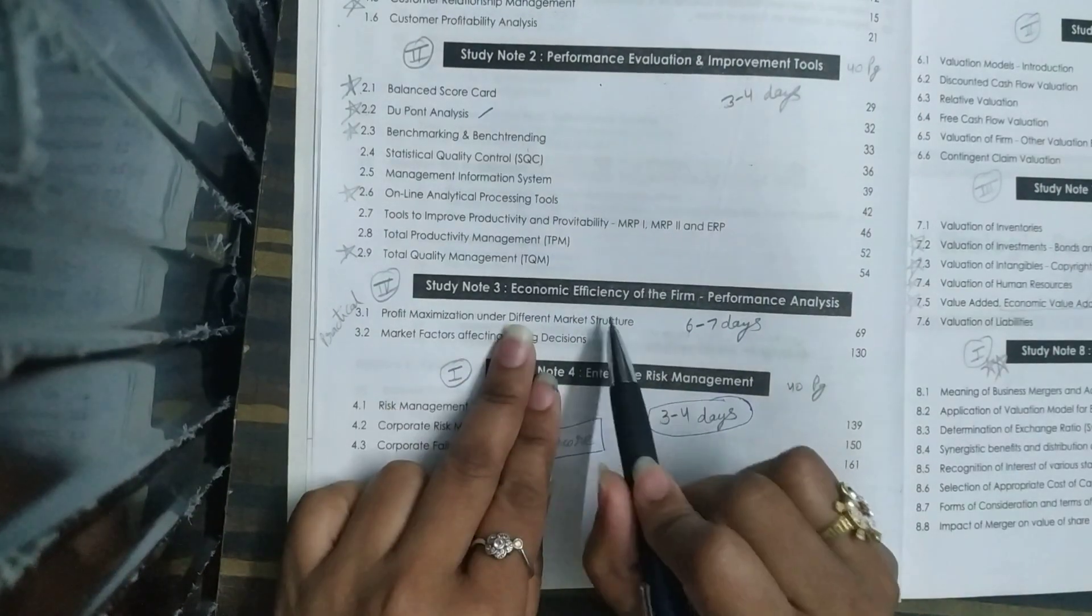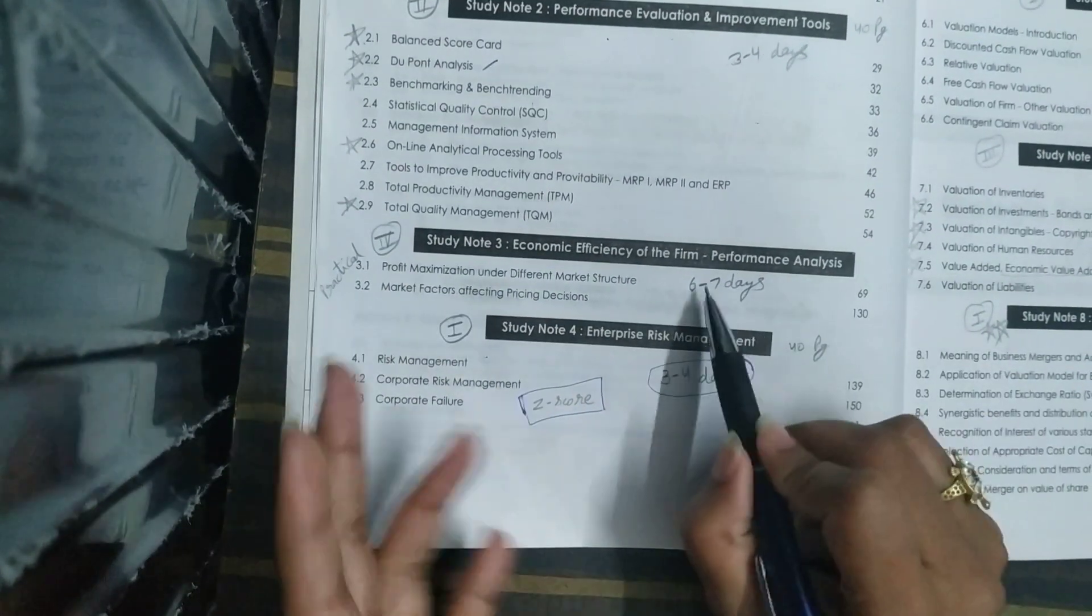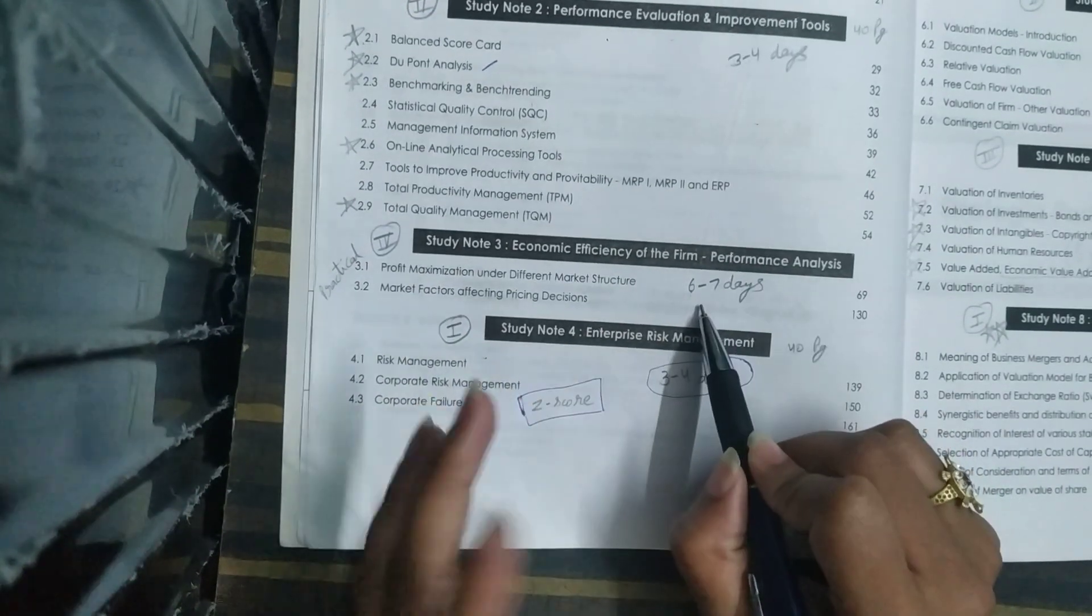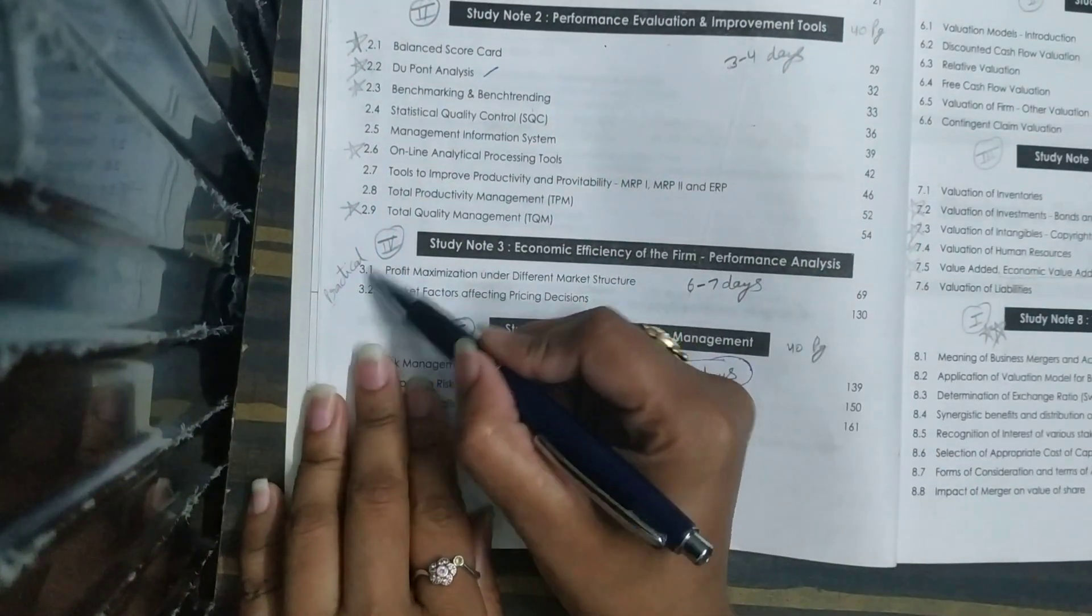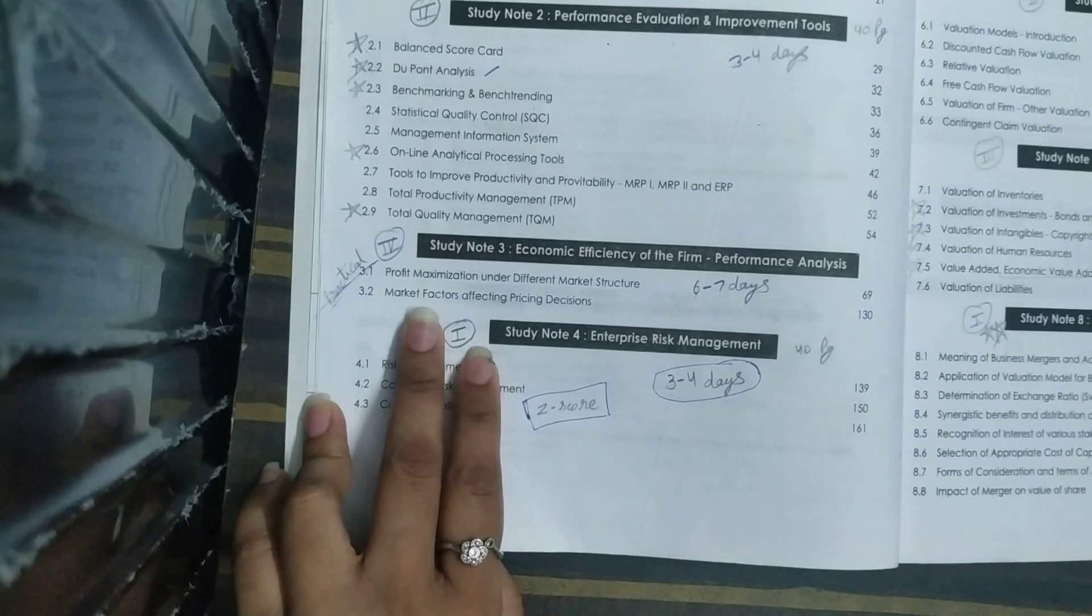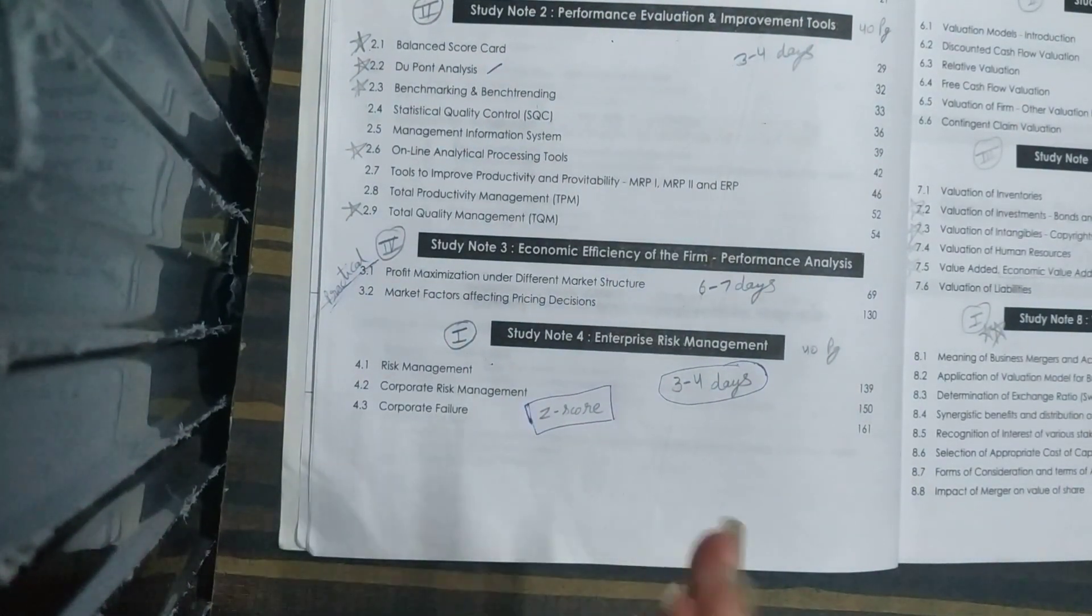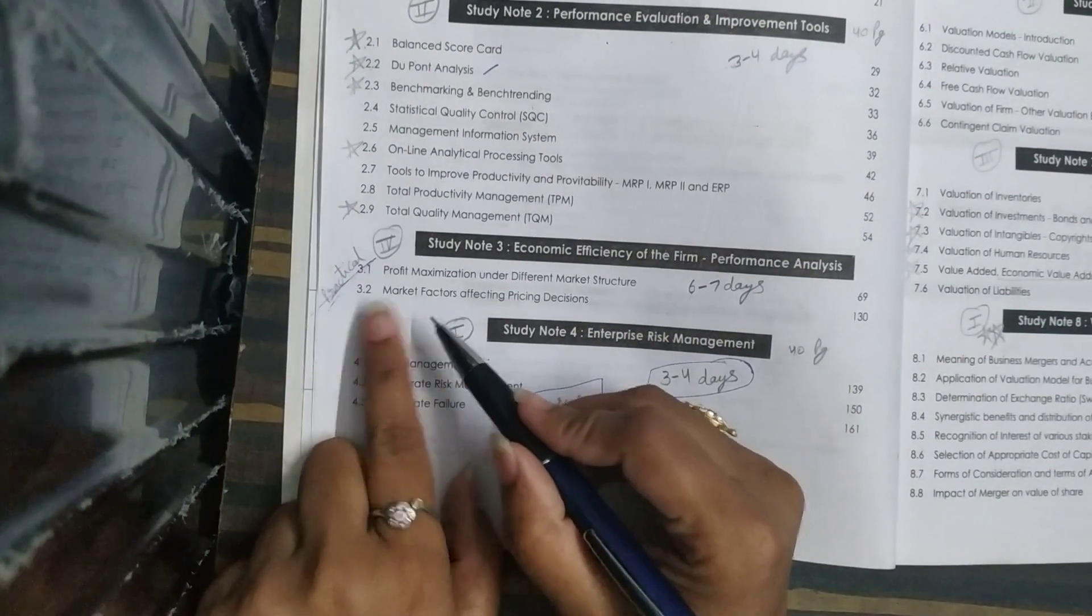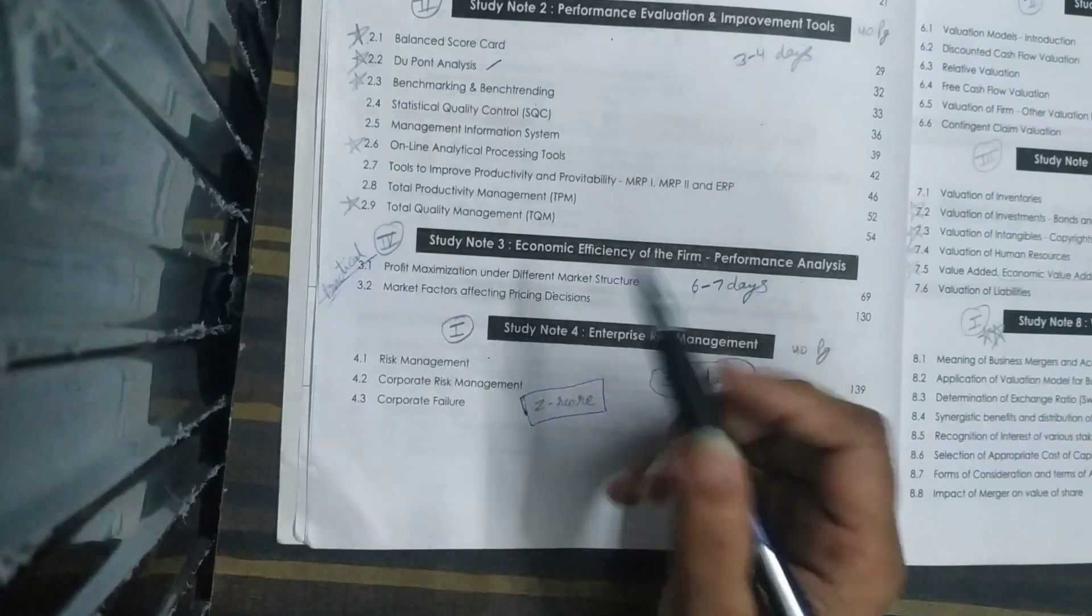Last but not least is Economic Efficiency or Firm Performance Analysis. This covers almost 60 to 70 pages in the study material and we can complete it in 6 to 7 days. This has practical questions on profit maximization, profit optimization. We need to know how much profit maximization of the company is, so you should practice it properly.